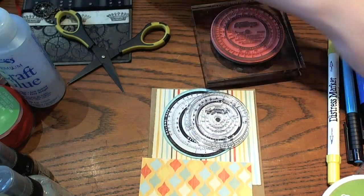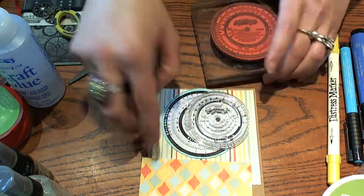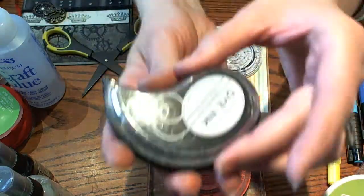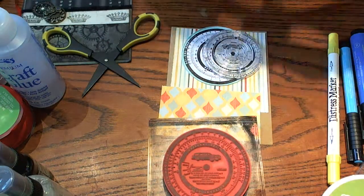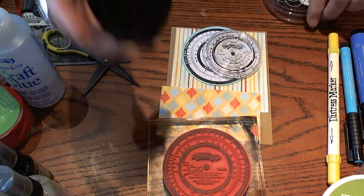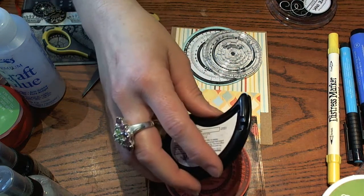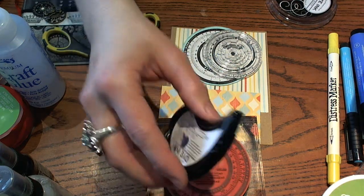All you're going to do is take your ink, and I'm actually going to use black dye ink from Paper Trey Ink. I'm going to take my white card stock. I'm just using a printer weight piece of paper.